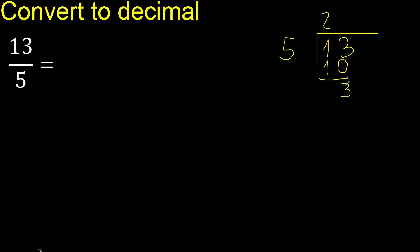Subtract 3. There is no number that goes down, therefore always complete with 0, and here with a point — point only once.